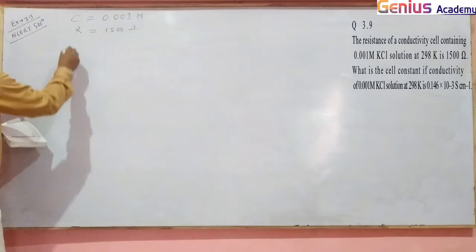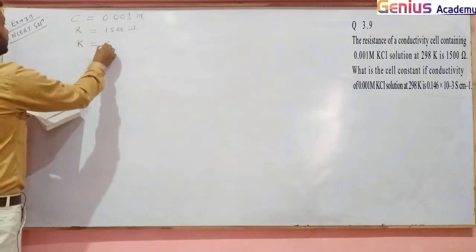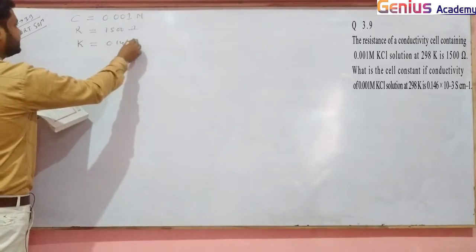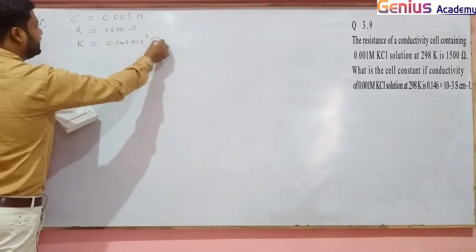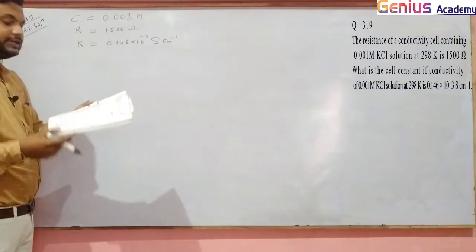This is the conductivity, which we represent as Kappa. Kappa is given as 0.146 × 10^-3 siemens per centimeter, and we are asked for the cell constant.